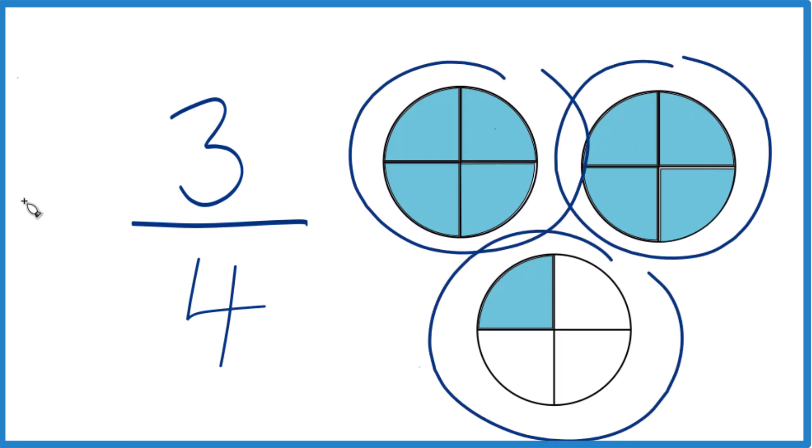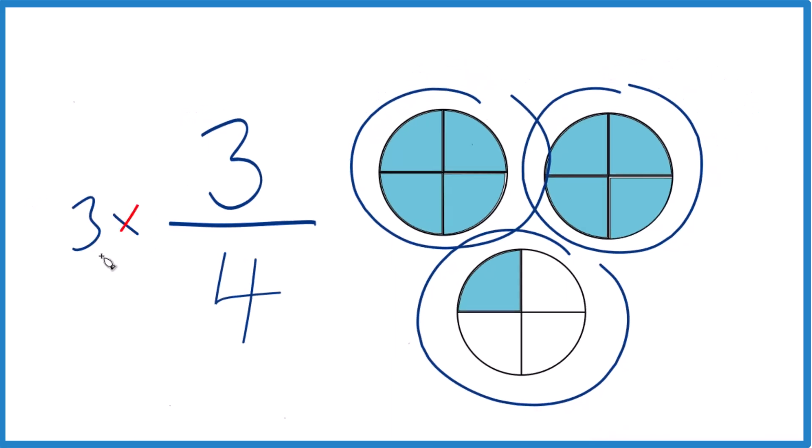So if you triple three-fourths cup, so three times three-fourths, you get one, two cups, and a fourth. So you get two and one-fourth cups. That's kind of a nice visual way to think about it.